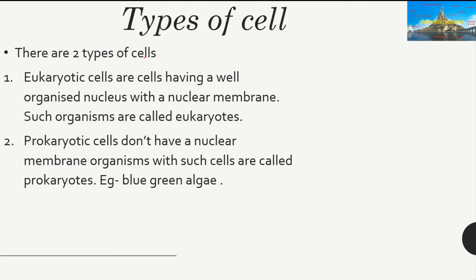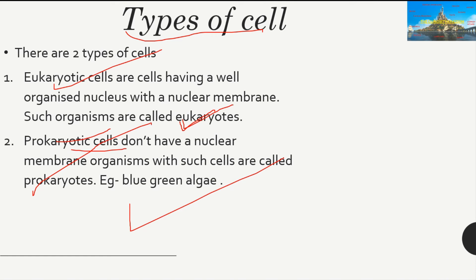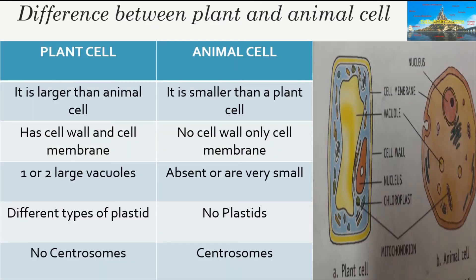There are two types of cells: eukaryotic and prokaryotic. In eukaryotic cells, there is a nuclear membrane and the cell is well-organized — human cells are eukaryotic. Such cells are called eukaryotic cells and organisms with them are called eukaryotes. Prokaryotic cells do not have a nuclear membrane, so the nucleus spreads throughout the cytoplasm and the cell is not well-organized. Organisms with such cells are called prokaryotes — for example, blue-green algae.